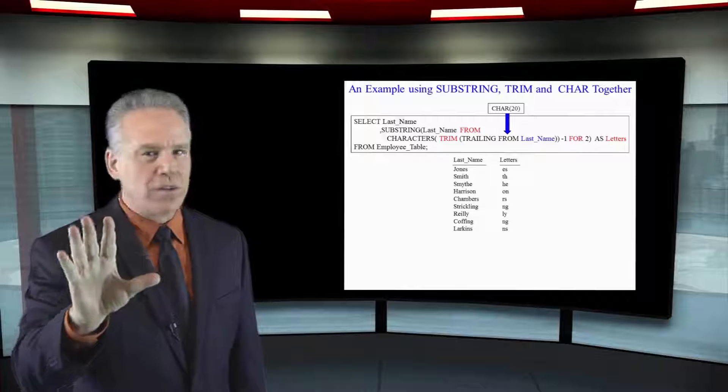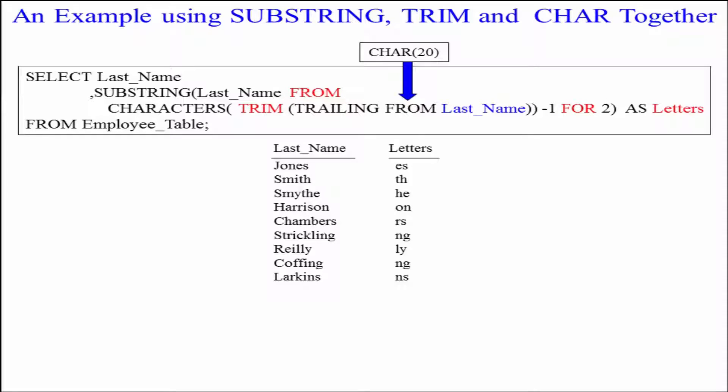So now we're going to see the substring command and remember substring has what I want to substring, what's the starting position and we've always seen a number like two or three, and how many positions should I go and we've always seen a number like two or three.